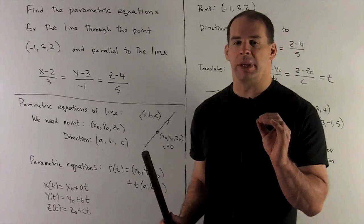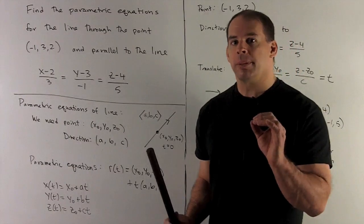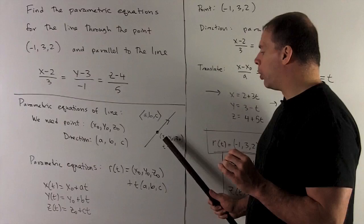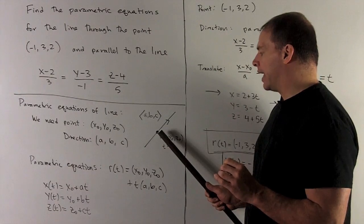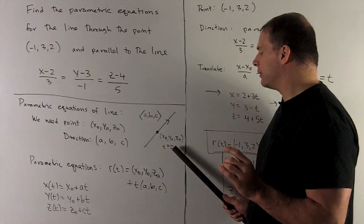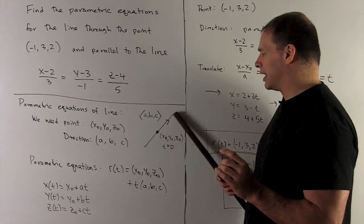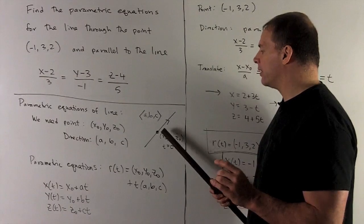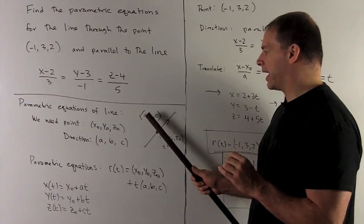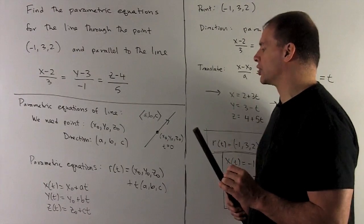The idea is, if we introduce a parameter, our point is going to be when t equals 0. If t is positive, we move along the line in the direction ABC from our point. If t is negative, we move by multiples of ABC in the opposite direction.